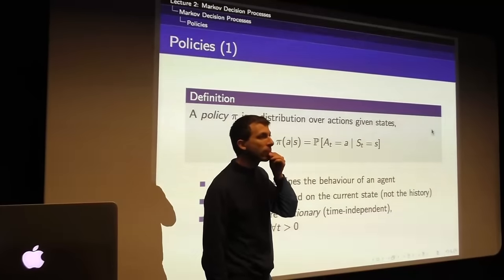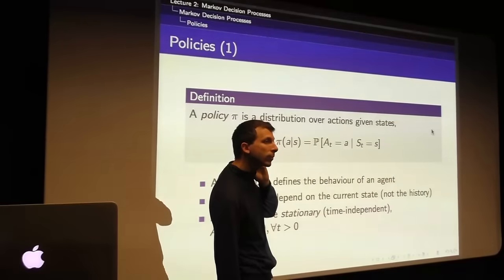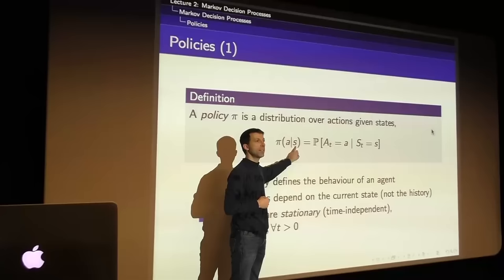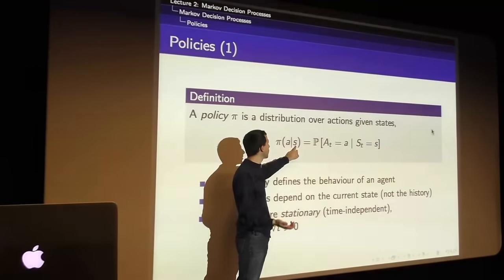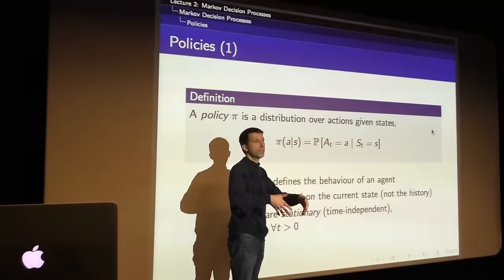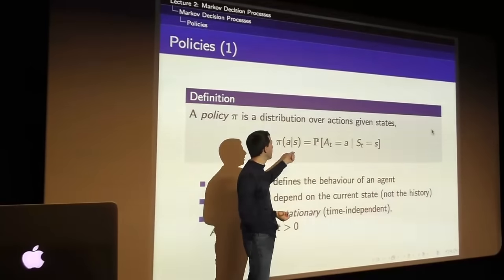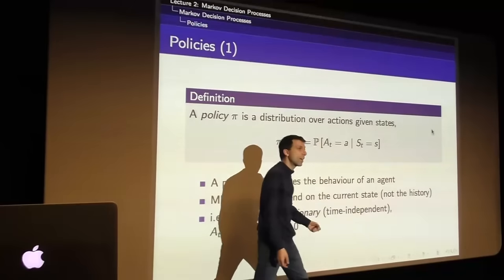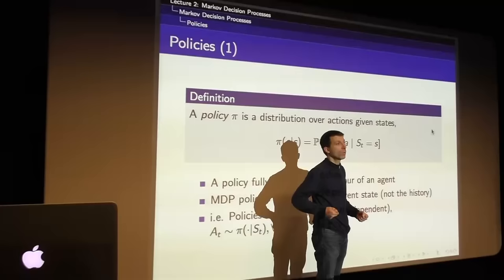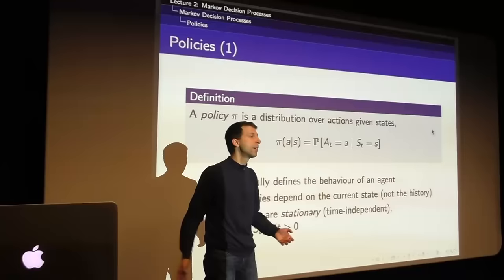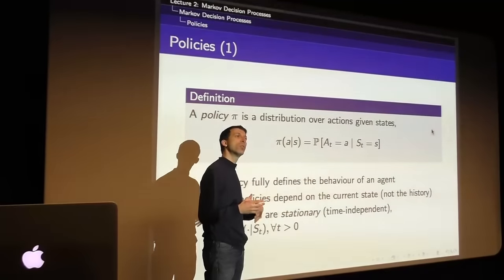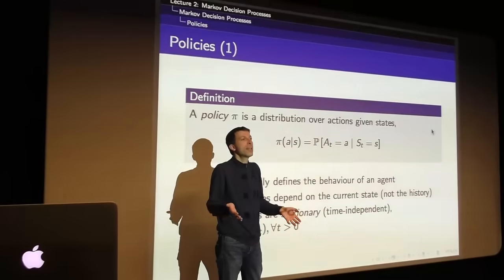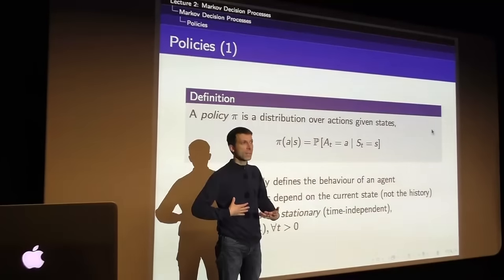A student asks why there are no rewards in the policy equation. Because the state S fully characterizes future rewards. What you want is a policy that, given your current state, picks actions leading to the most future reward. Rewards already received are gone — all that matters is maximizing reward from now onwards. We don't care whether we've already accumulated a million reward or minus a million reward; we want to maximize from the current state forward.